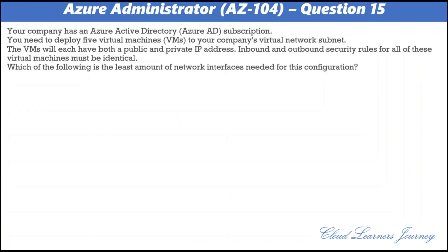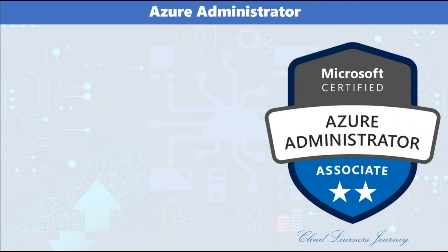Question number fifteen. Your company has an Azure AD subscription. You need to deploy five virtual machines to a virtual network subnet. The VMs will each have both a public and private IP address, and inbound and outbound security rules for all VMs must be identical. What is the minimum number of network interfaces needed? The correct answer is A: 5. A NIC holds the public and private IP of the VM, and you can associate a Network Security Group to the NIC. Since the same rules apply to all, one NSG attached per NIC fulfills the requirement.